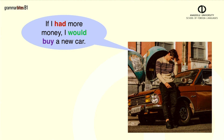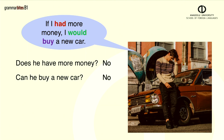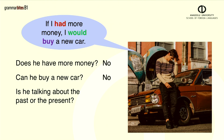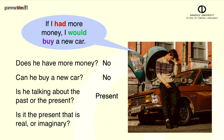Let's look at this sentence more closely. Does he have more money? No. Can he buy a new car? No. Is he talking about the past or the present? He's talking about the present. Is it the present that is real or imaginary? It is an imaginary or hypothetical sentence. He is thinking how the present would be different if he had more money.